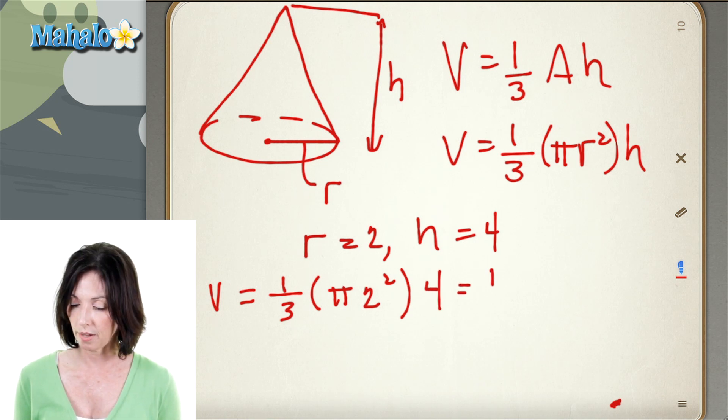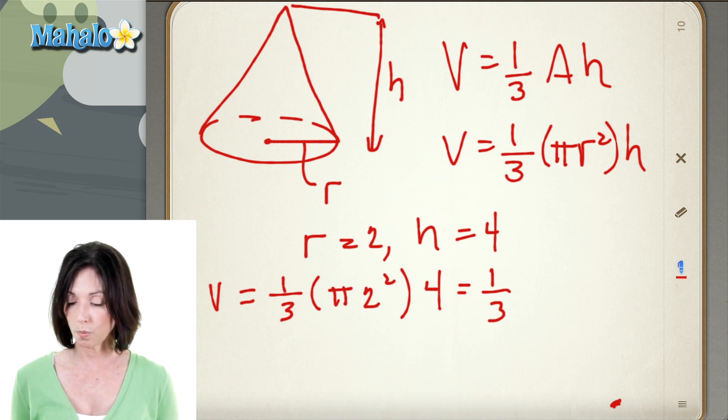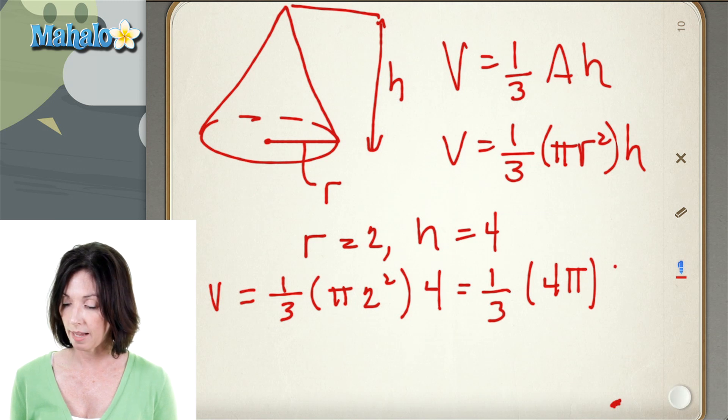Okay, so I'm going to leave that one-third out there for now. Now 2 squared is 4, so that means I have 4 pi times 4, my height.